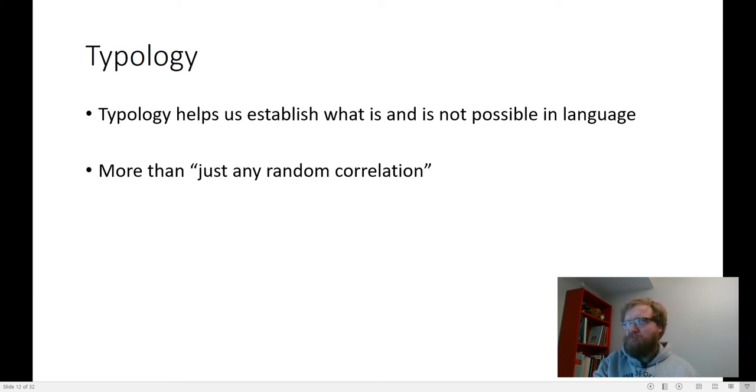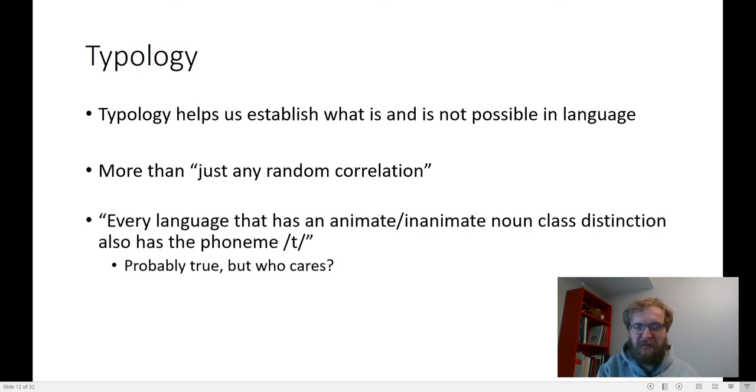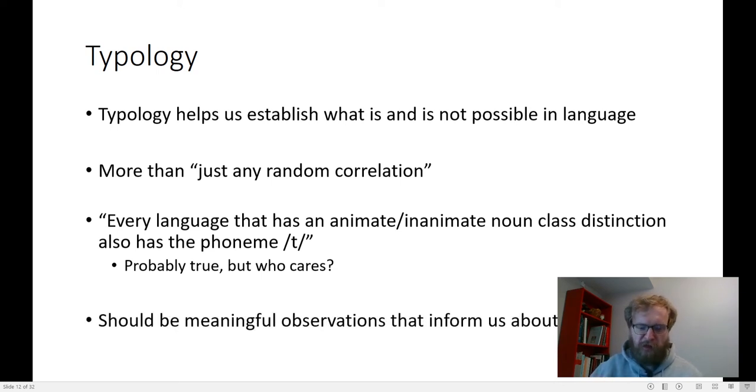This search for universals helps us establish what is possible and establish what is not possible. However, we want to try to be really careful with what we correlate. We don't want to just make random observations about just any two random things. For example, it's probably a true statement that every single language with an animate-inanimate noun class or gender distinction also has the phoneme T. This is probably true, but it just doesn't matter. It probably doesn't have anything to do with the fact that there's an animate-inanimate noun class distinction, that there's also a phoneme T. That's probably just an accident. What we're looking for in typology is meaningful observations that aren't just obvious random statistical chance.